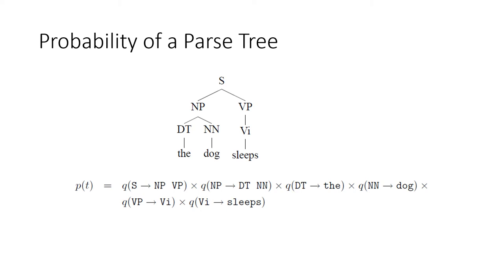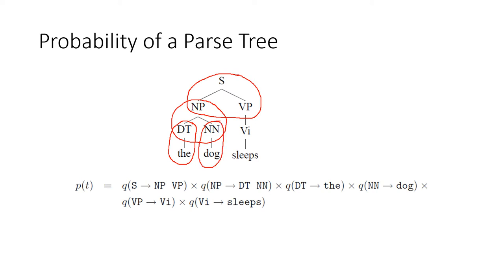To calculate the probability of a parse tree given the PCFG, we calculate the product of q terms from top to bottom: the probability of S → NP VP, multiplied by the probability of NP → DT NN, multiplied by q(DT → the), multiplied by q(VP → VI), and finally multiplied by q(VI → sleeps).